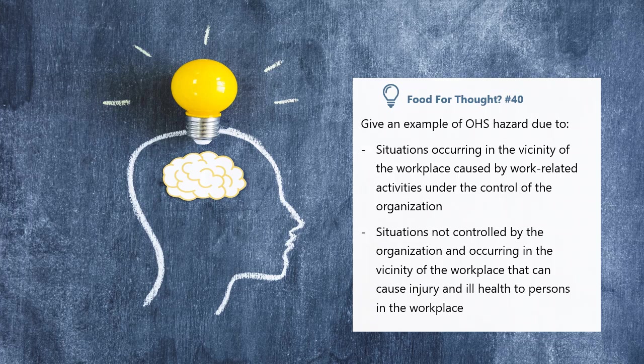Pause this slide and think of the answer before I explain. The examples for the first situation could be those in the vicinity of the workplace who could be affected by the activities of the organization — for example, a passerby, contractors, or immediate neighbors, or the workers carrying out maintenance at the customer site may create OHS hazards for the customers.